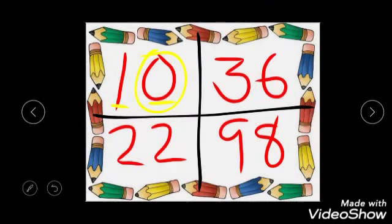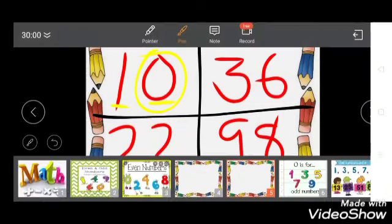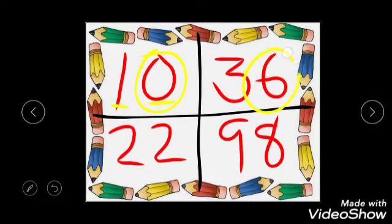Now 36. Tell me, 36, which is the end number? 6. Does 6 come in the 2's table? 2 ones are 2, 2 twos are 4, and 2 threes are 6. Very good students. So this is also what kind of number? Even number.